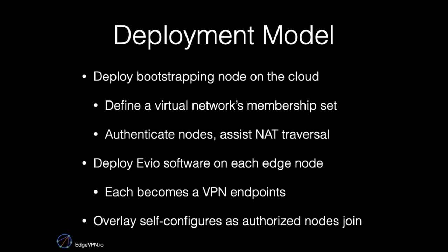Every node that participates in EdgeVPN runs the EVO software and becomes a VPN endpoint in this network. As nodes join and leave the network, the overlay self-configures to add or remove nodes no longer participating in the computation.